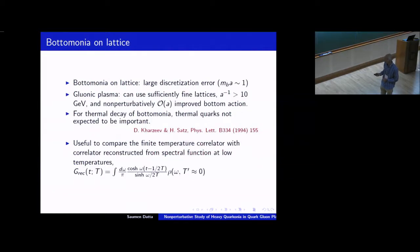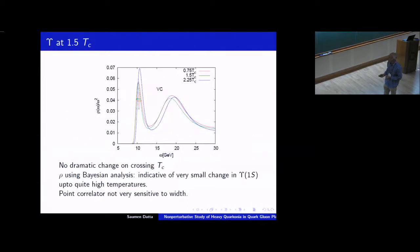Okay, bottomonia. So I'll be interested for reasons that will become clearer very soon in studies of bottomonia. Charmonia were studied quite extensively like 10 years ago or so. So with bottomonia, of course, there are very large discretization errors if you want to study them directly as relativistic objects on lattice. So we'll be restricting ourselves to gluonic plasma and use lattices which are very fine. Lattice spacing much larger than 10 GeV and non-perturbatively improved bottom action. So hope is that this keeps the cutoff effects kind of under control.